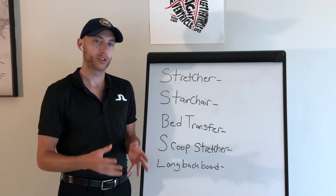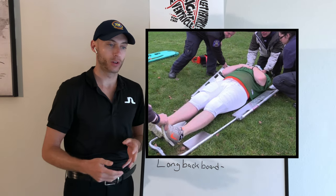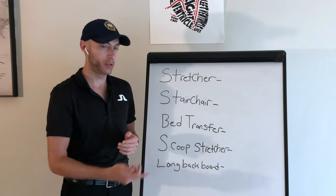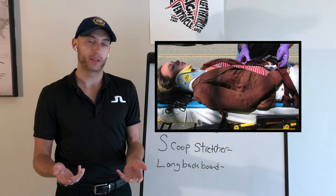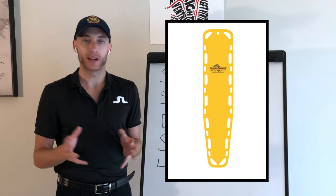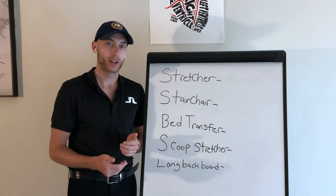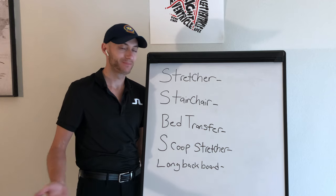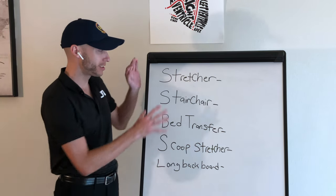A scoop stretcher is pretty cool — it's for somebody who's on the ground, and it's an easier mode of transportation to lift them. It's also used when you have a long distance or are on a field. Depending on where you practice, the scoop stretcher may be used a lot or once in a blue moon. The long backboard used to be used to stabilize someone's back, but not so much anymore. In my opinion, the long backboard should only be used to roll a patient onto the board and get them to the stretcher — though the scoop stretcher kind of does the same thing.